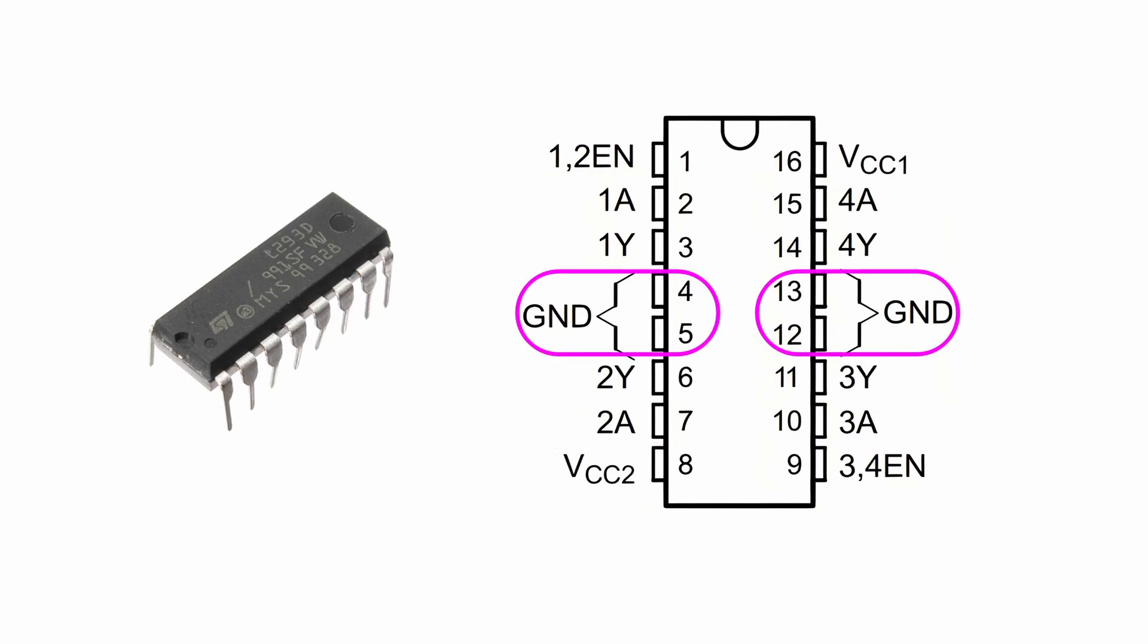Pins 4, 5, 12, and 13 are GND, which are ground pins used for connecting the circuit's ground line.